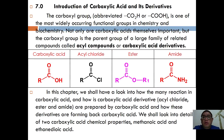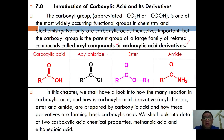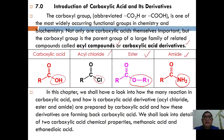The carboxyl group, abbreviated as COOH, is one of the most widely occurring functional groups in chemistry and biochemistry. Not only are carboxylic acids themselves important, but the carboxyl group is the parent group of a large family of related compounds called acyl compounds, or sometimes called carboxylic acid derivatives. In this topic we are going to learn three carboxylic acid derivatives: acyl chloride, ester, and amide.